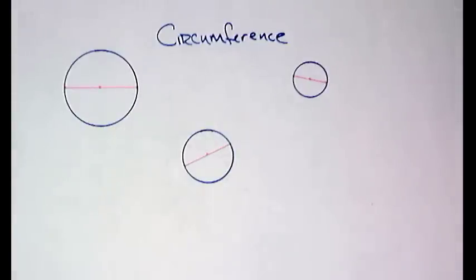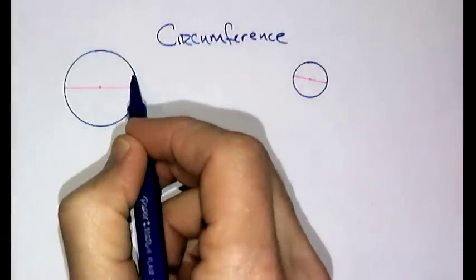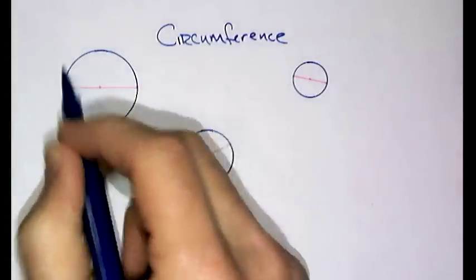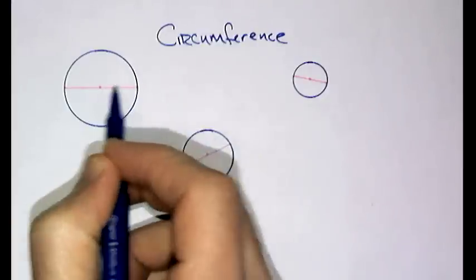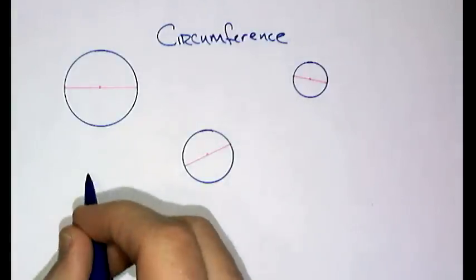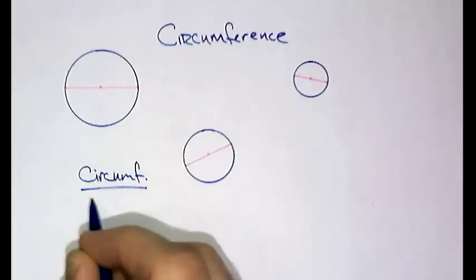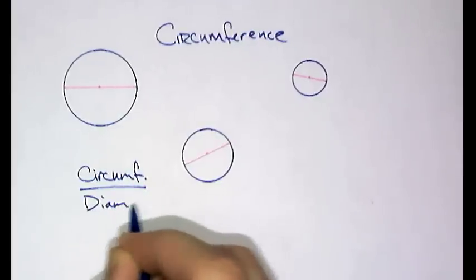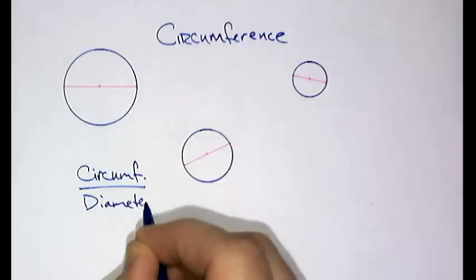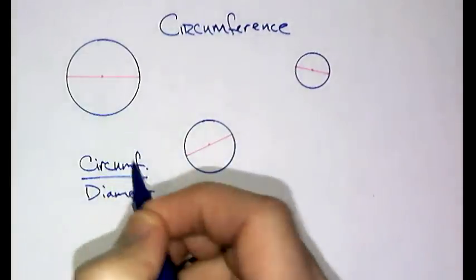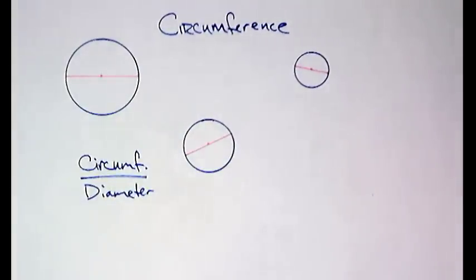What they discovered was that if I took the circumference of a circle and I divided it by the diameter, it came up to be a value which seemed consistent. If you take the circumference divided by the diameter, and that value, what do you think it turned out to be? It turned out to be a little more than three times as big. And we know that value now as pi.